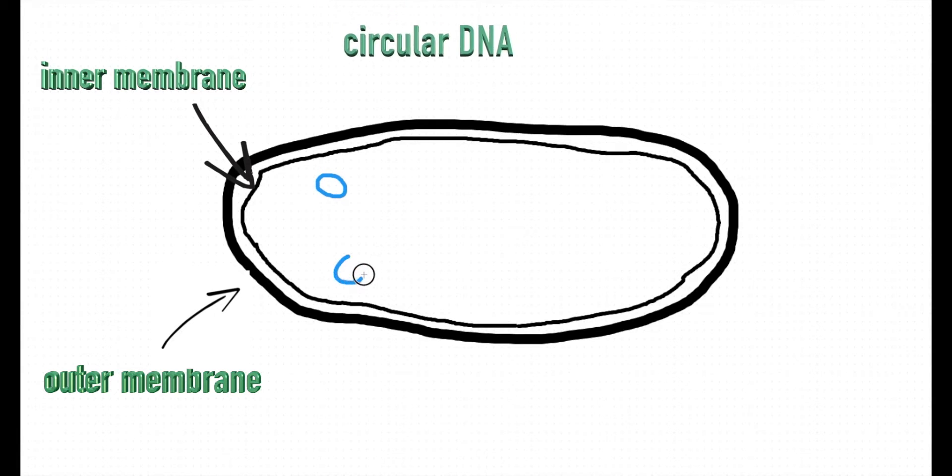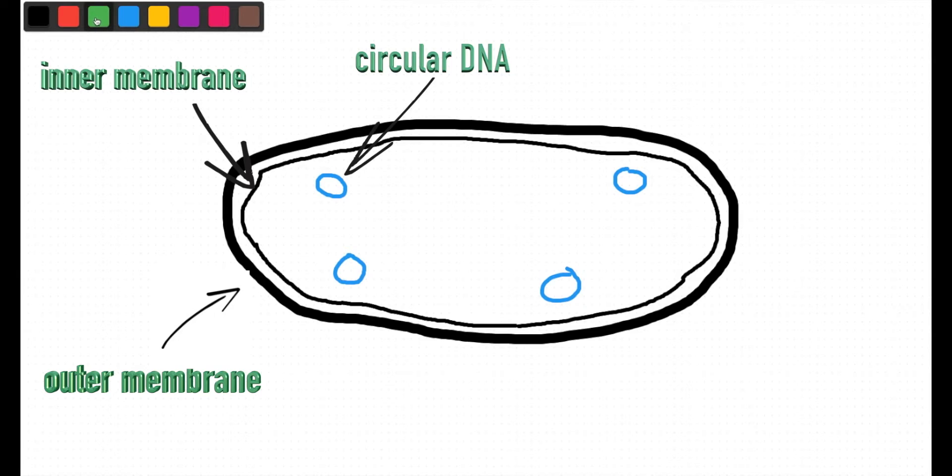Circular DNA is also found within the chloroplast. Chloroplasts have their own DNA, like mitochondria.